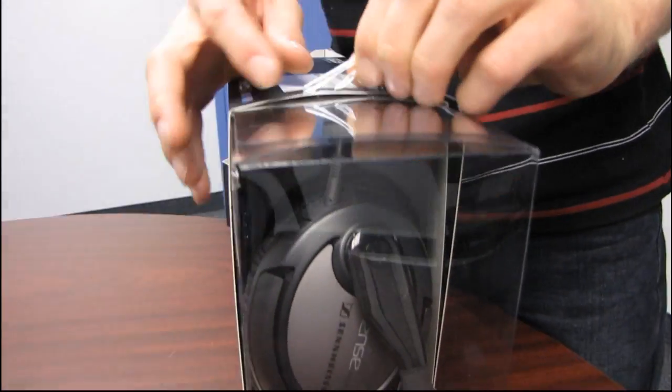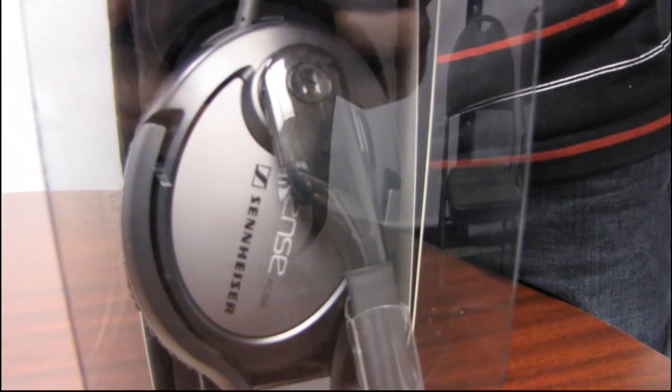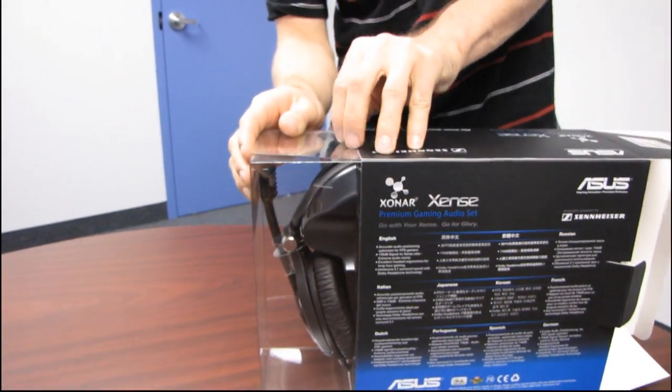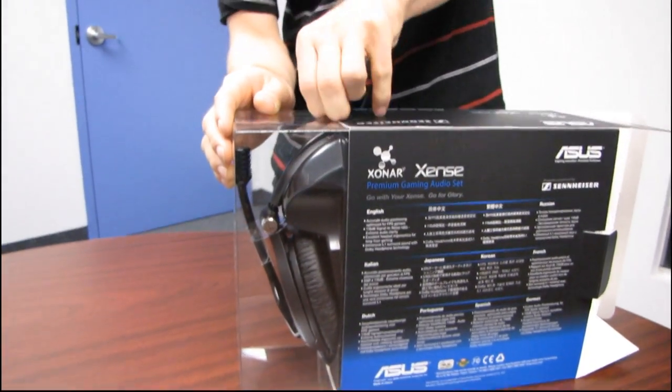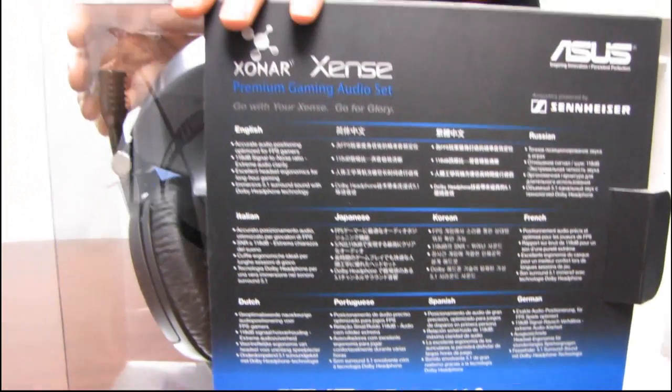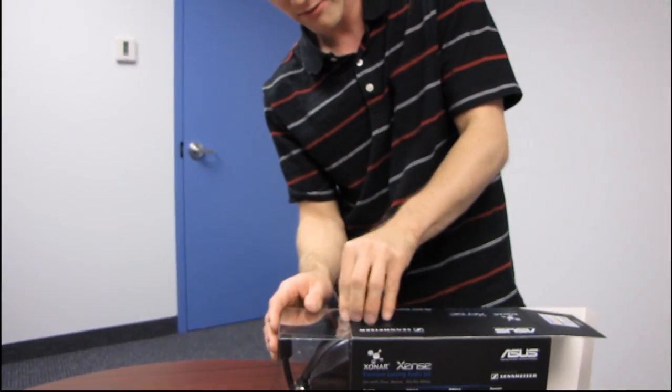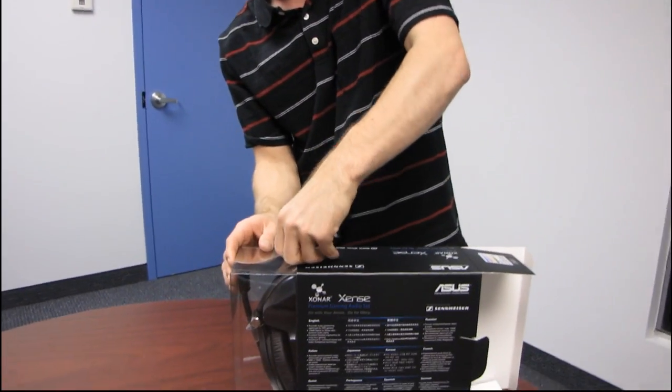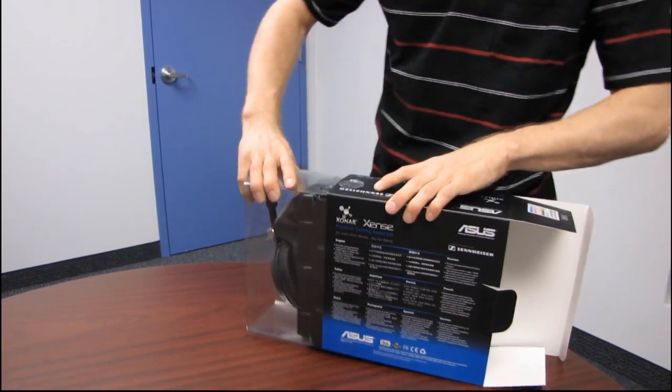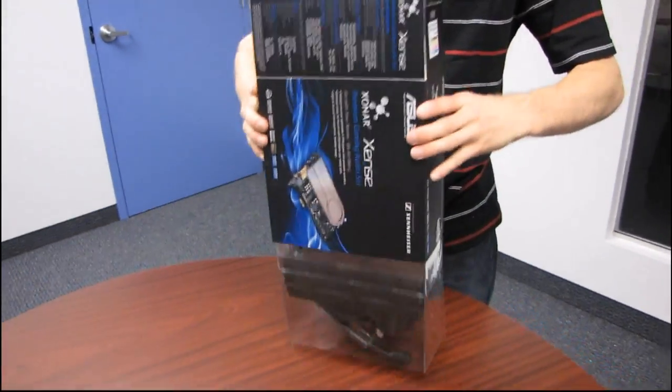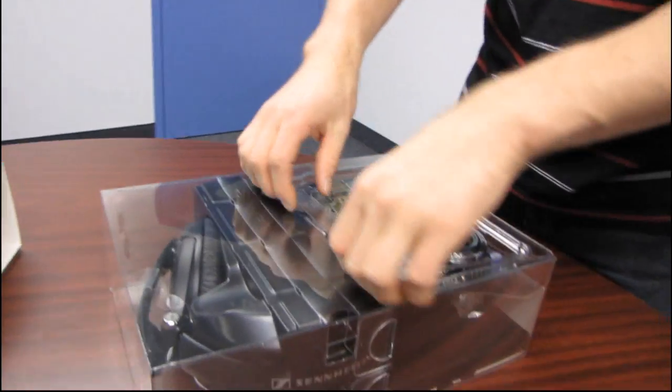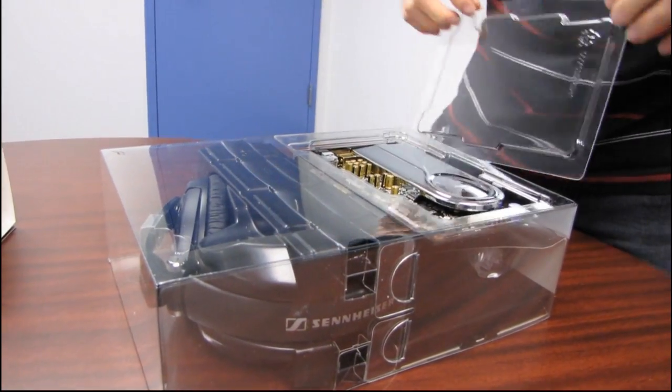So this is the problem with live one-take unboxing videos, is I have to figure out the box in real time. You know, I actually had a PC350 headset not long ago, and I also have an HD555. And I've got to say, the HD555 particularly is one of the most difficult boxes I have ever encountered. In fact, it seems like headsets in general are fairly challenging. Like I had some real problems with the Corsair HS1, as you guys may or may not recall if you saw that video. I just couldn't get that box apart for the life of me.